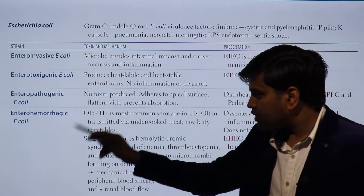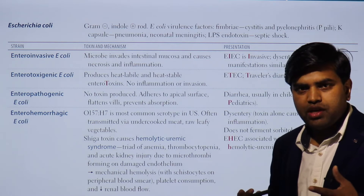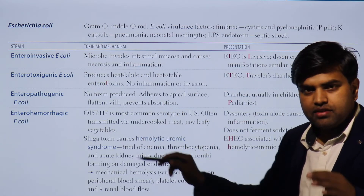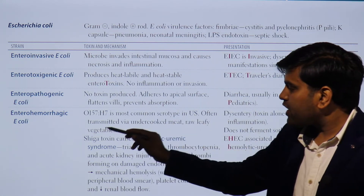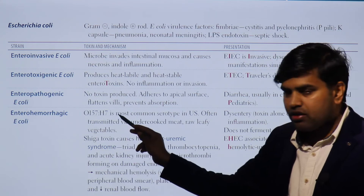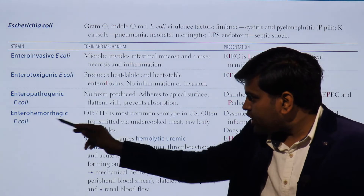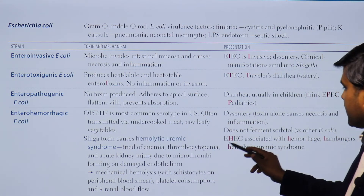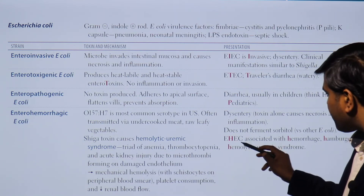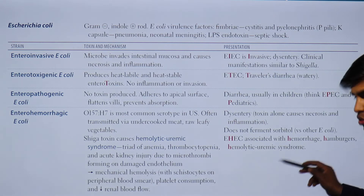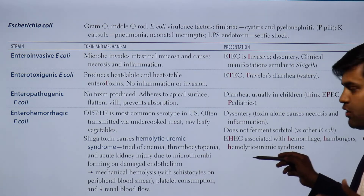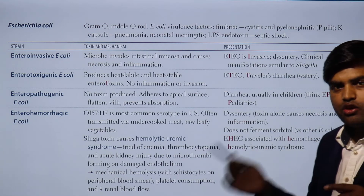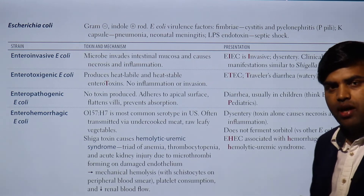Enterohemorrhagic E. coli, abbreviated EHEC, is a very serious disease. Its prototypic serotype name is O157:H7, the most common serotype in the US. EHEC causes hemorrhagic diarrhea — bloody diarrhea — but with no pus. It is associated with hamburger consumption and leads to the complication of hemolytic uremic syndrome. HUS involves hemorrhagic diarrhea, a link to hamburgers, and hemolytic uremic syndrome.